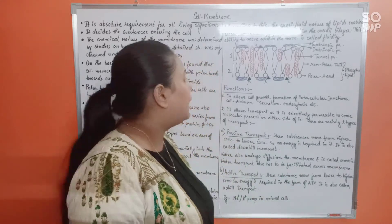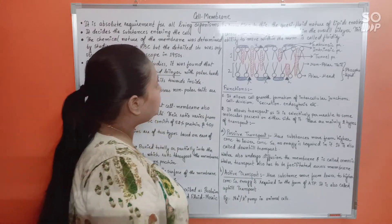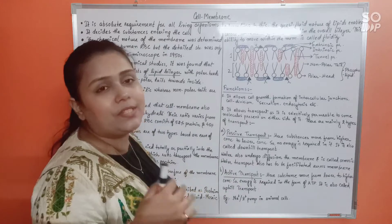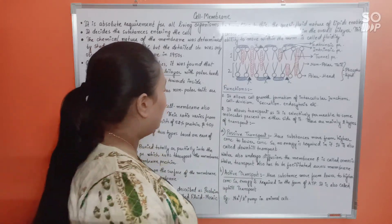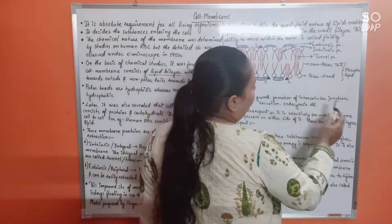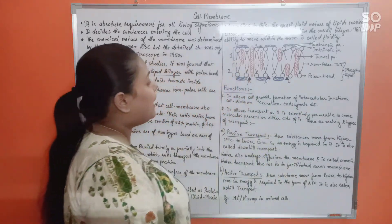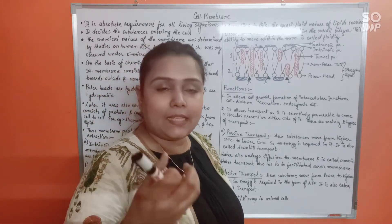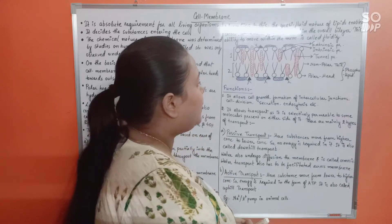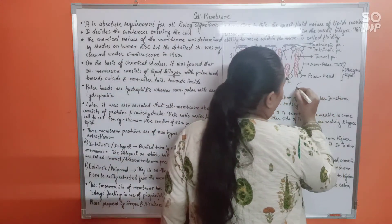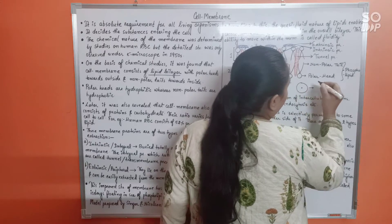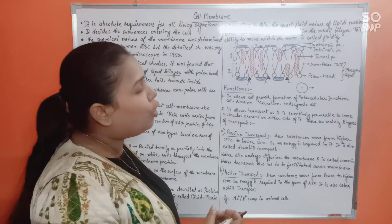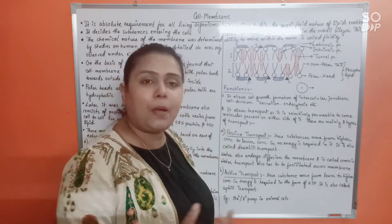Now let us see the functions of the plasma membrane. There are many functions — the survival of the cell itself depends on the cell membrane. It allows cell growth, formation of intercellular junctions, cell communication, secretion, and endocytosis. Endocytosis means: suppose something very large wants to enter the cell.